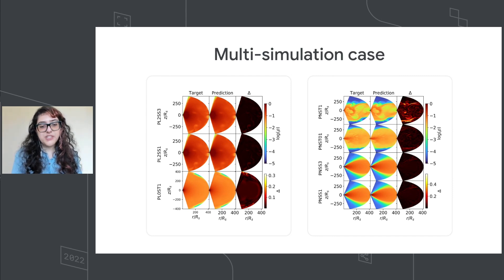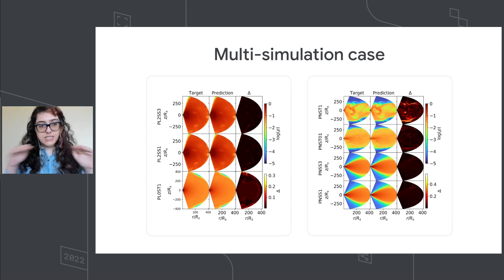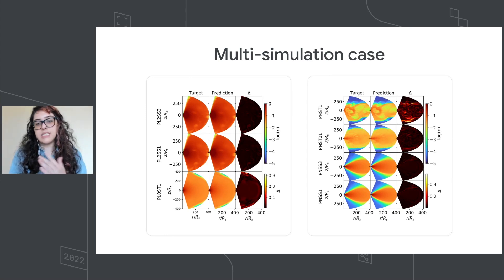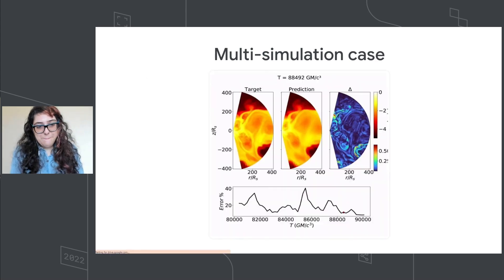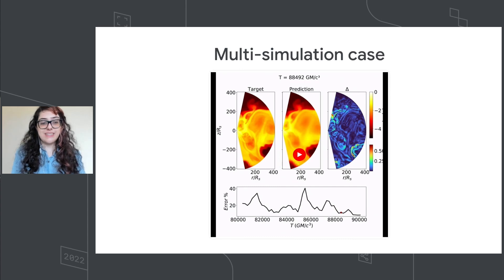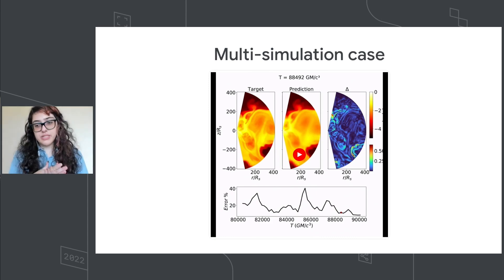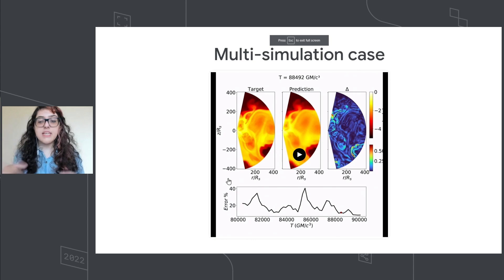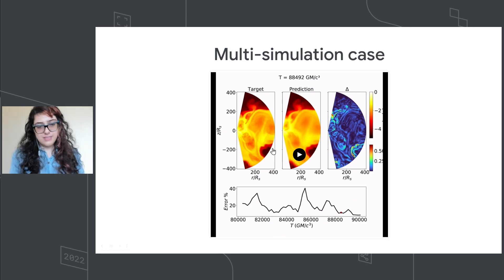These pictures show different kinds of simulations the model can handle. One of them — PNST01 — is very variable, and the model handles it very well. Even when the accretion disk is moving a lot, the model can handle it. The problem remains grid resolution, which is why we see high peaks in the error. We are solving that with better data and better resolutions, and it's working.